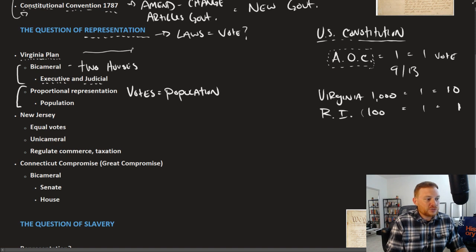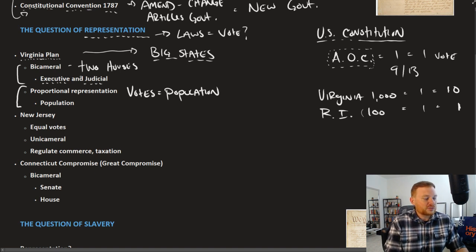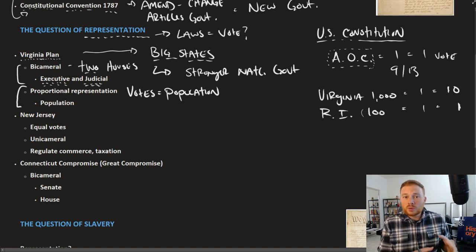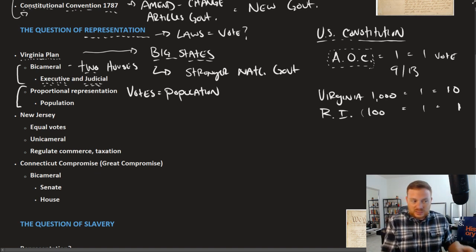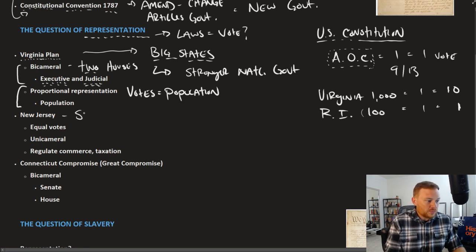The Virginia Plan, as you might imagine, was supported by the big states — those with large populations. The idea of creating two houses, an executive, and a judicial branch amounted to creating a stronger national government, putting more power into fewer hands like an executive branch. The small states said, 'Whoa, wait a minute.'